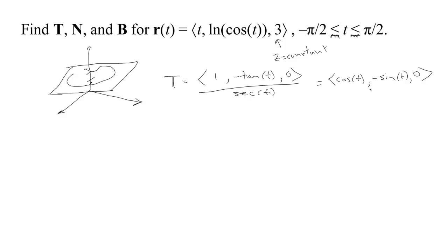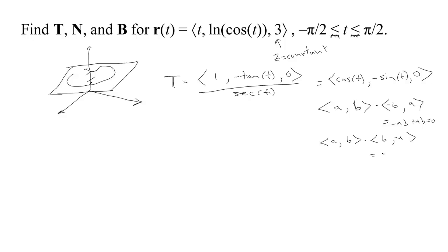Since one component is 0, this is essentially a 2D vector, and it's easy to find the normal. For any vector (a, b) in the plane, you can create two perpendicular vectors by switching the components and negating one: either (negative b, a) or (b, negative a). Both give a dot product of 0 with the original, so we have two candidates for the normal.